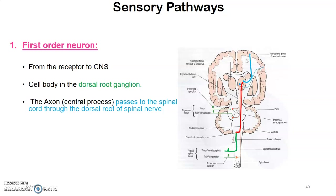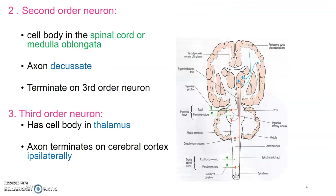The first-order neuron runs from the receptor to the CNS, and its cell body is located in the dorsal root ganglion. The axon passes to the spinal cord through the dorsal root of the spinal nerve. The second-order neuron has its cell body in the spinal cord or medulla oblongata, and the axon usually decussates and terminates on the third-order neuron. The third-order neuron has its cell body in the thalamus, and the axon terminates on the cerebral cortex.